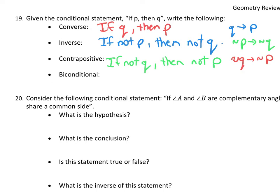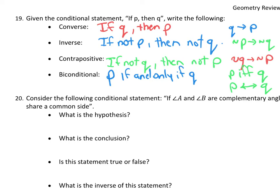The last one, biconditional, was the easiest — 'if and only if': p if and only if q. We wrote it two ways: with the two f's and with a double-headed arrow. It's bidirectional: q implies p and p implies q. If one is true, the other is true. Most definitions and theorems are biconditional statements.